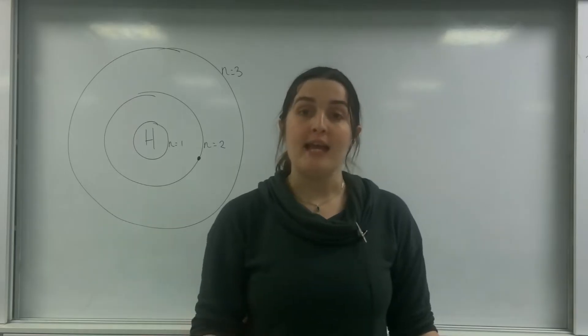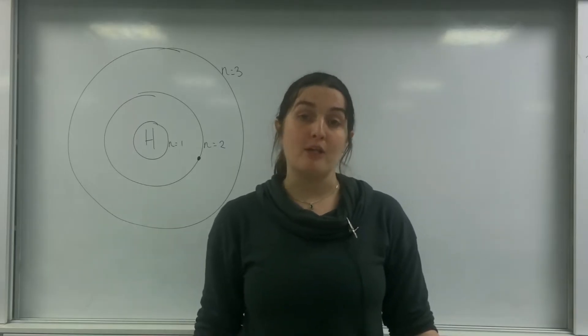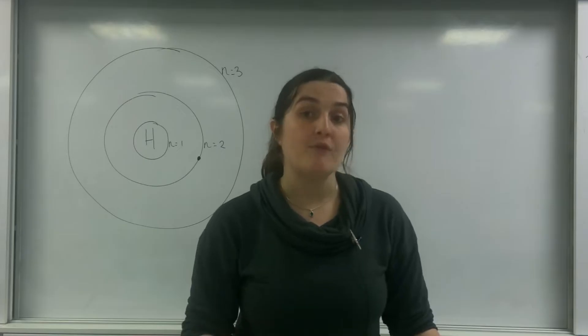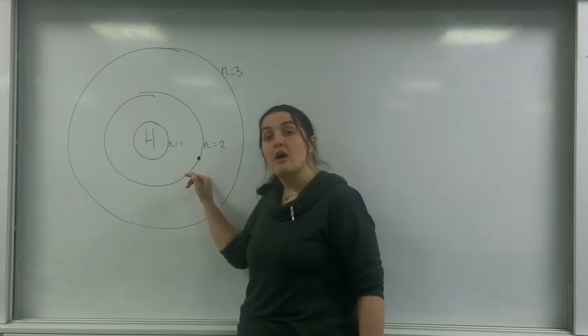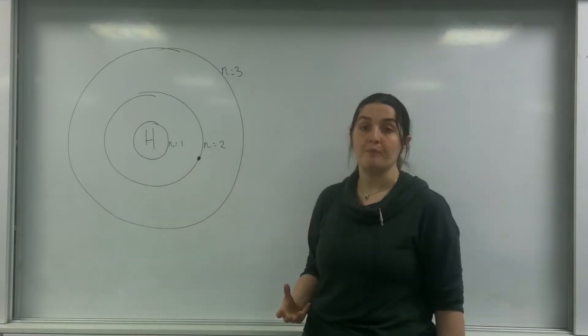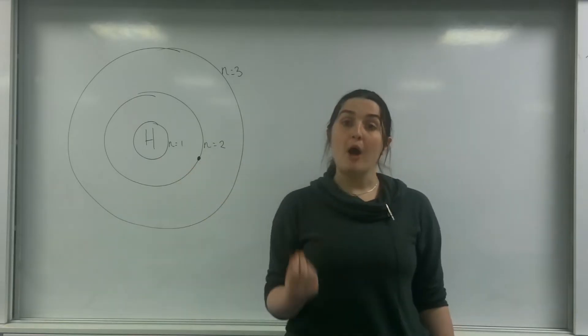When they were looking at the absorption and emission spectra, they were specifically looking for the lines that associated with any electron that started at n equals 2, and these lines are called Balmer Lines.